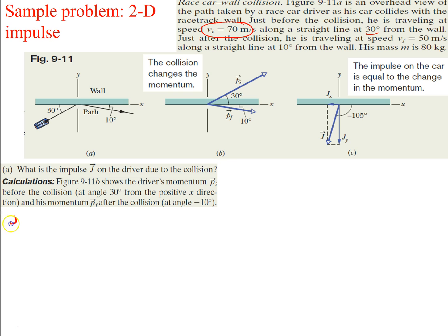We know that our impulse J is a vector, equal to the change in momentum delta P, which is simply our final P minus our initial P. That's just m times the final velocity minus the initial velocity. We're talking about two different directions, so we split this into x and y components, which we'll do frequently for linear momentum problems.